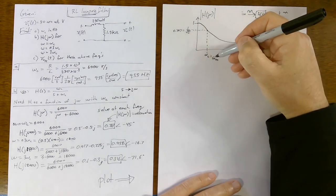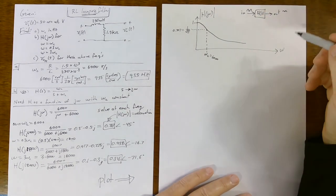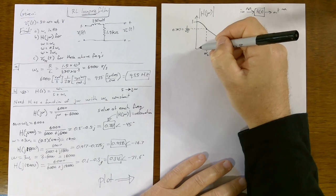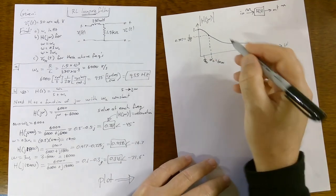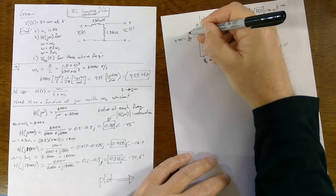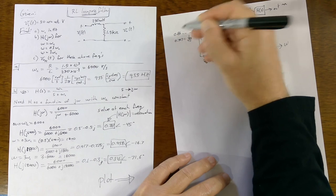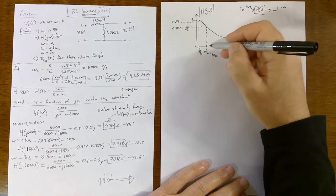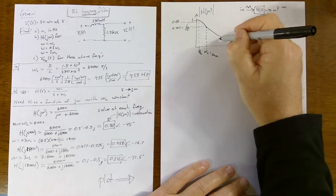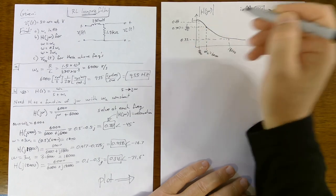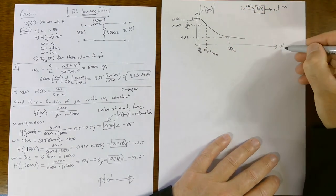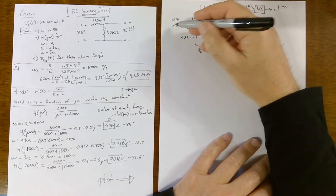A lower frequency signal at 0.3 of the cutoff — the 1,800 radians per second signal — is attenuated much less, at 0.96, so most of it gets through. The 18,000 signal at three times cutoff is out further on the curve, attenuated at 0.316. Only 32% gets through. The high frequency signal is mostly attenuated, the low frequency signal mostly passes, and at the cutoff, exactly 0.707 gets through.